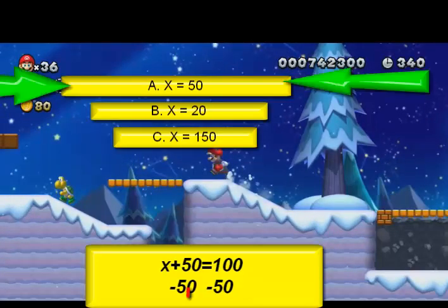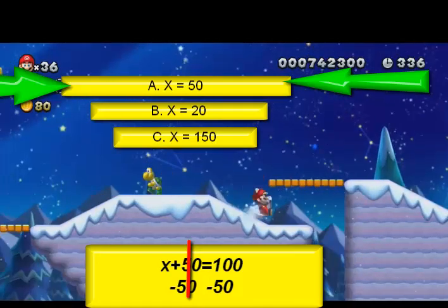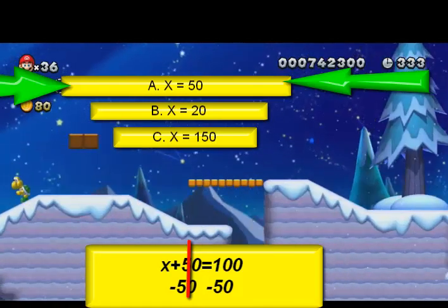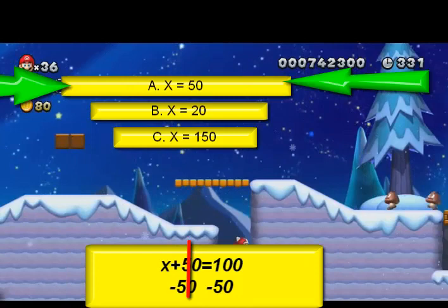x plus 50 equals 100. Now you add the opposite, which is negative 50, on both sides. You can select the negative 50, you get A, which is...